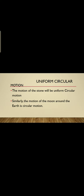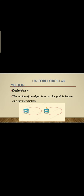Similarly, the motion of the moon around the earth is circular motion. The motion of an object in a circular path is known as circular motion. If a body is moving in a circular path, then this type of motion is known as circular motion.